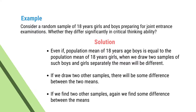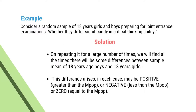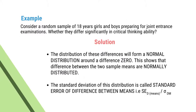...when we draw two samples of boys and girls separately, the means will be different. If we draw another two samples, there will again be some difference between the two means. On repeating this process for a large number of samples, you find that there is always some difference between two samples drawn from the same population. This difference may be positive, negative, or zero. The distribution of these differences forms a normal distribution around the difference of zero. The standard deviation of this distribution is called the standard error of difference between the means.